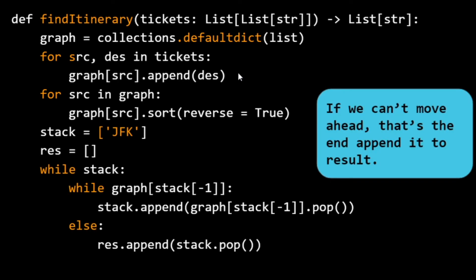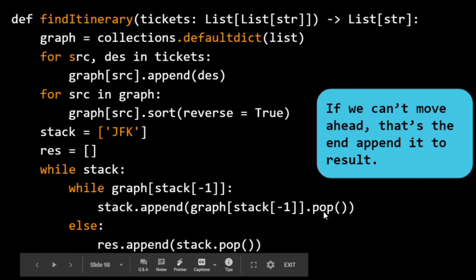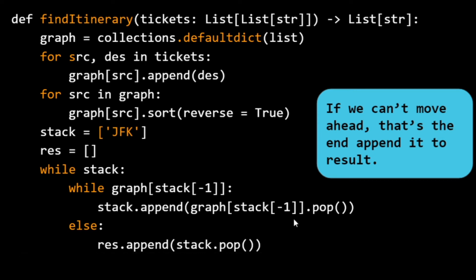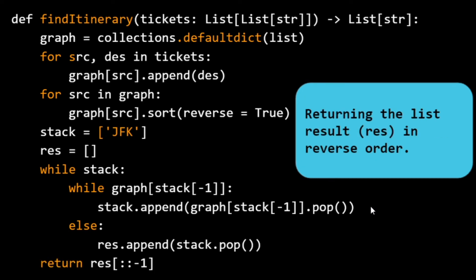We take the last value of the stack and look at all its possibilities from the graph. We pop a destination from that list and push it onto the stack, moving forward. Whenever we reach an airport with no further destinations, we append it to our result list — that airport is the current end of our route. The first element appended will be the actual final endpoint of the itinerary, then the second-to-last, and so on. Finally, we reverse the result list to get the correct order.